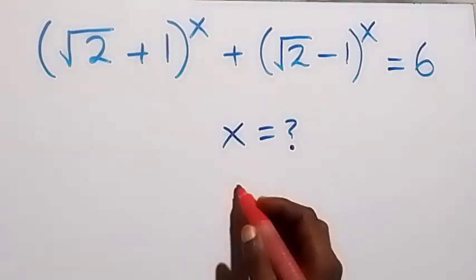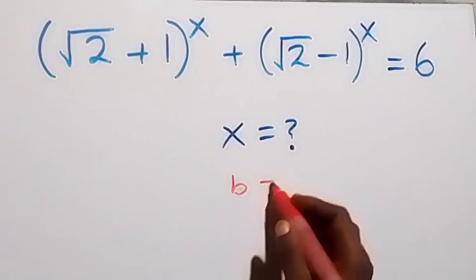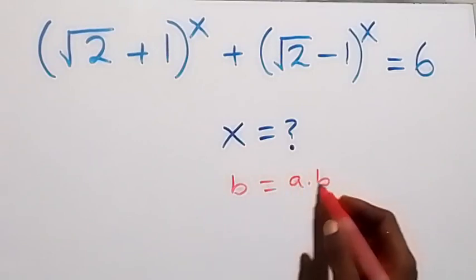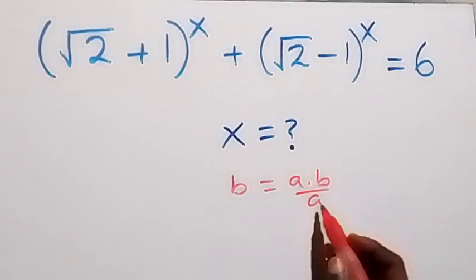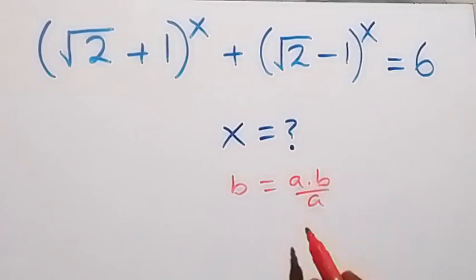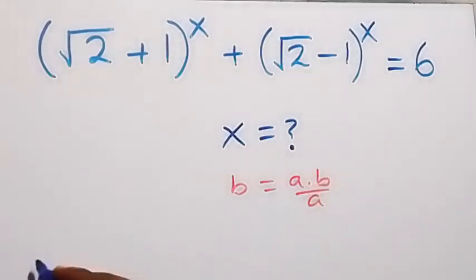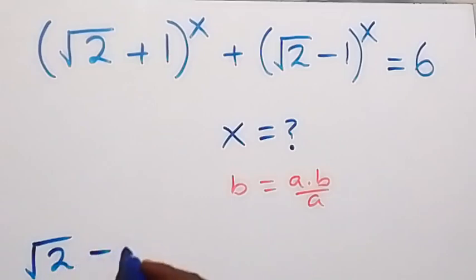Here, when we have b, we can write it as a times b over a. Why? Because when it comes to each other here, we are still having b. Then, from what we have here, we can write root x minus 1, root 2 minus 1.